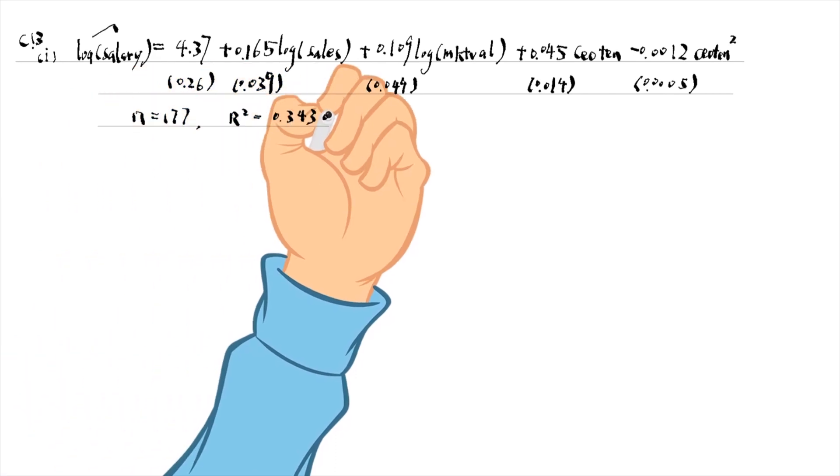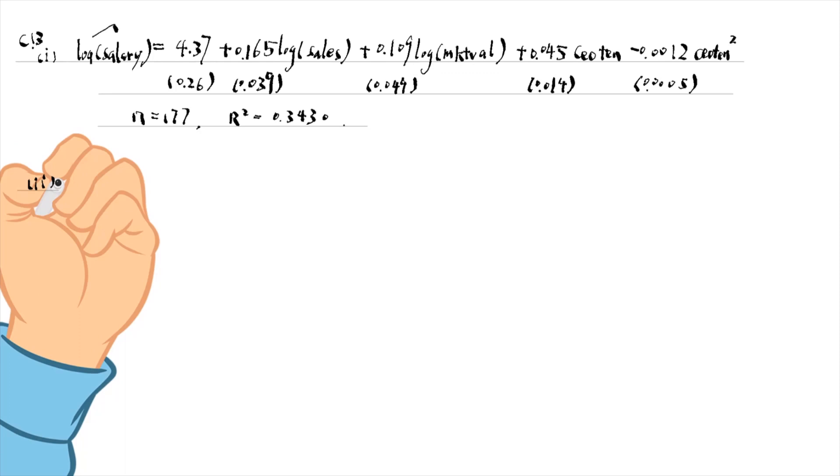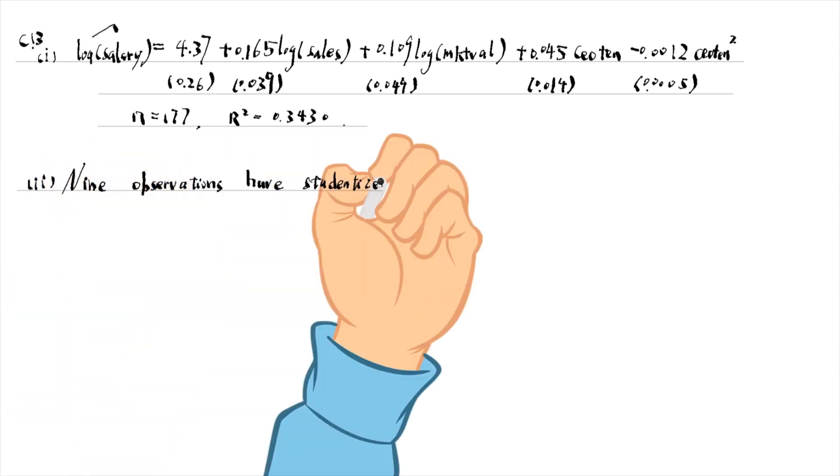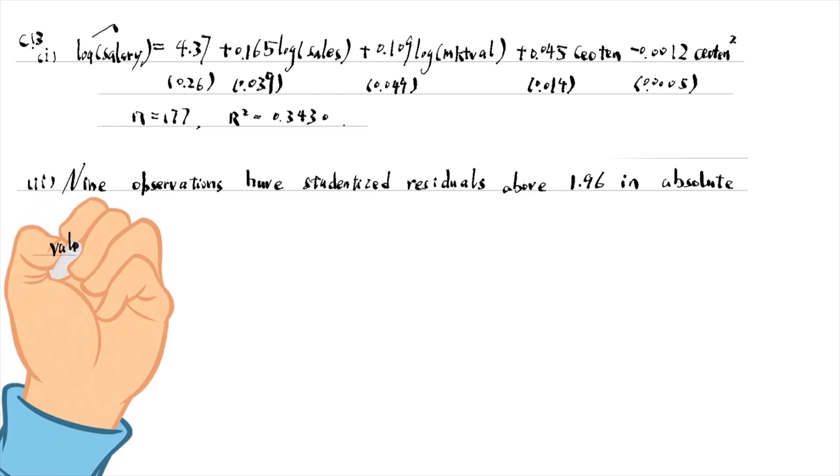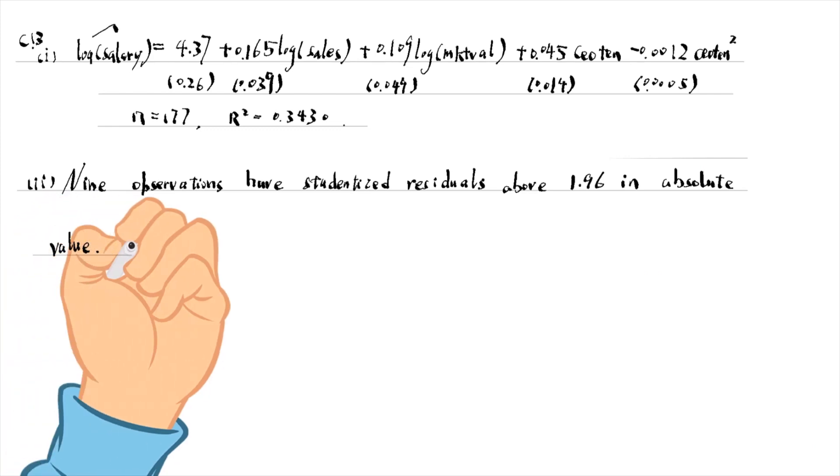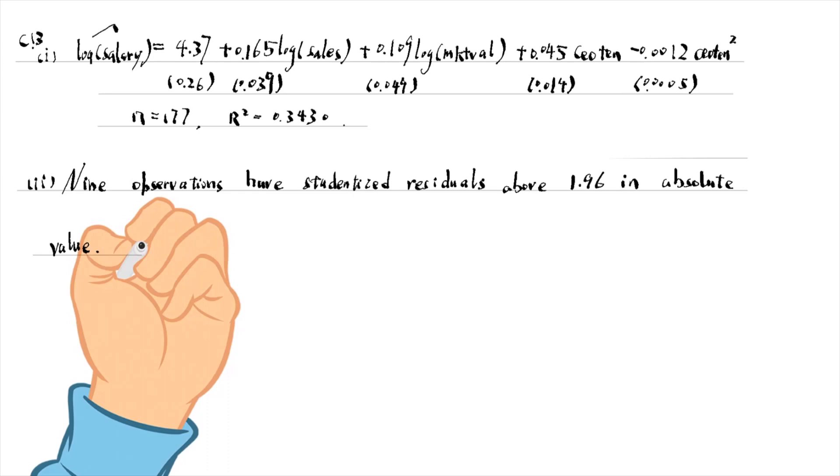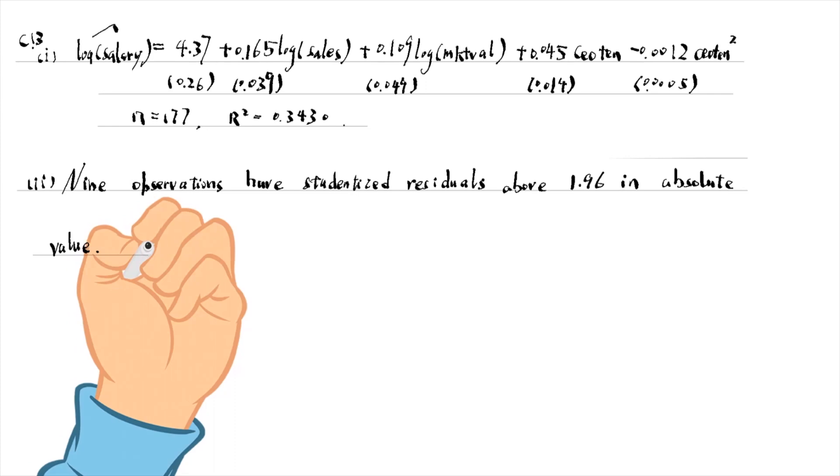For part 2, we use the Stata PREDICT command and RSTUDENT option to obtain the studentized residuals. 9 studentized residuals are above 1.96 in absolute value. About 5% of the observations are expected to be above 2, i.e. 9 observations.